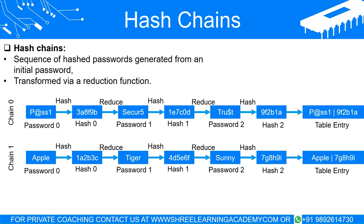The inner workings of rainbow tables: rainbow tables utilize hash chains — a sequence of hashed passwords generated from an initial starting password. This involves hashing an initial password, then converting the resulting hash back into a new password using a reduction function. The new password is then hashed again and the process repeats. The reduction function ensures that the new password is different from the initial password to prevent the creation of a loop within the hash chain.